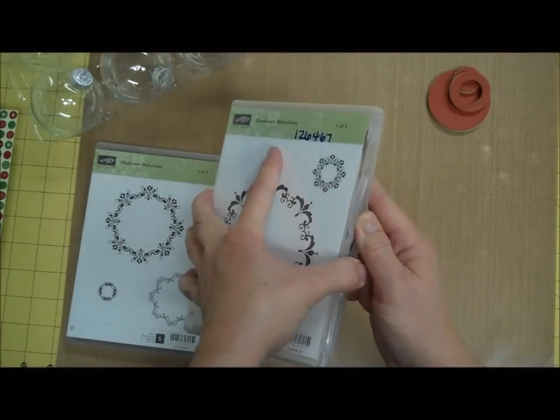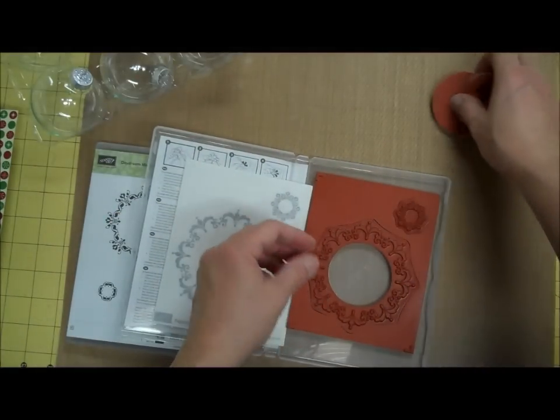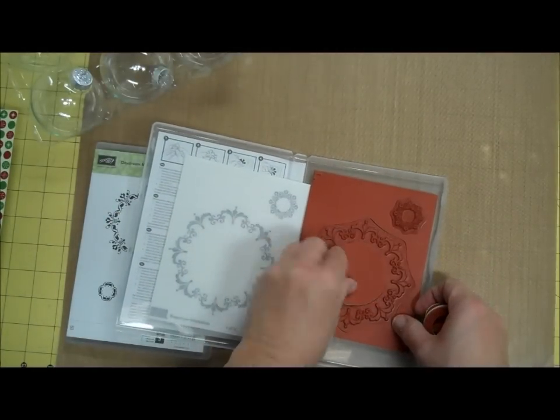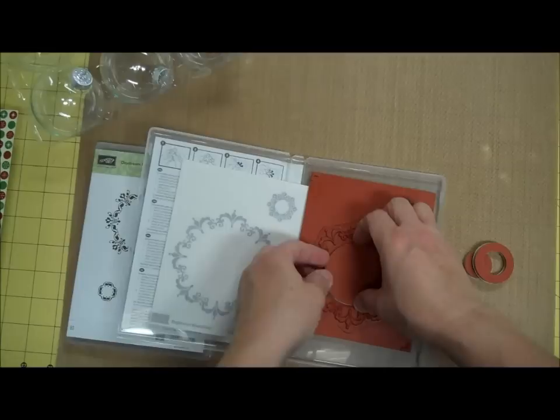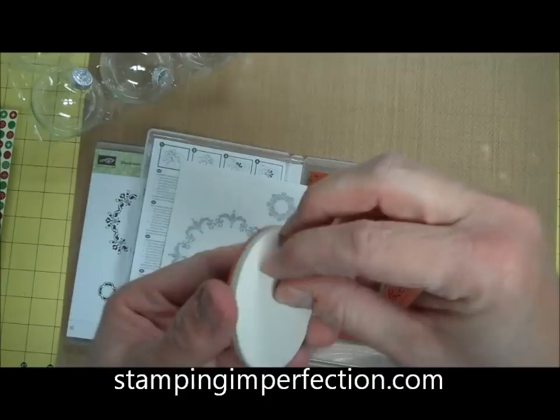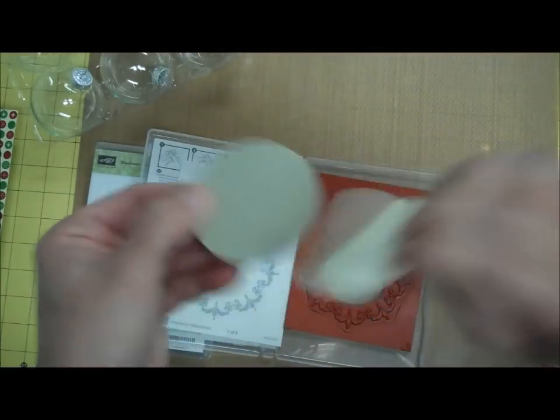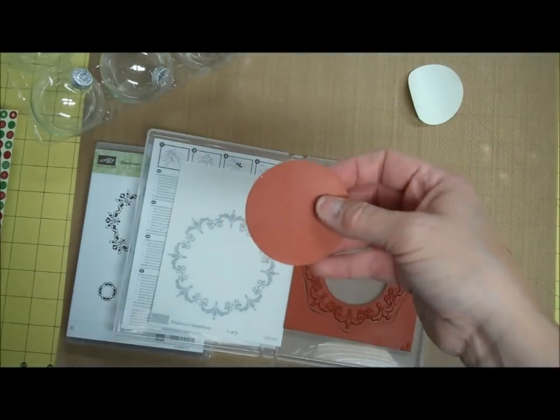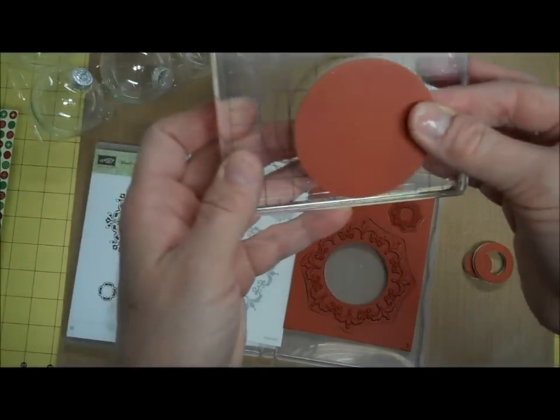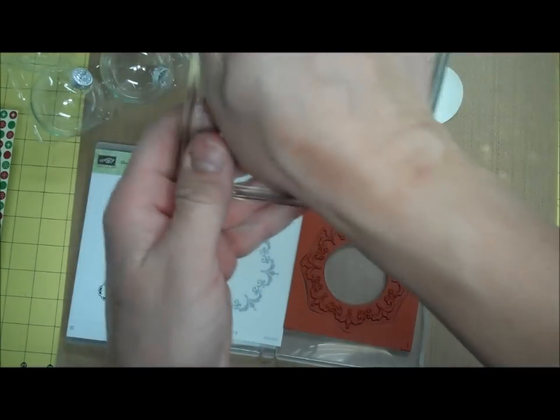So what I'm going to do is, I'm going to take one of these boxes. You'll notice they come like this. So I'm going to take this out, and I'm keeping this circle, because this circle, when I remove this paper backing, this will work great on one of my clear sets, or one of my clear blocks.